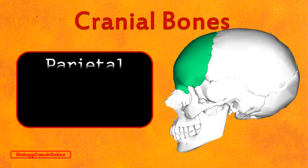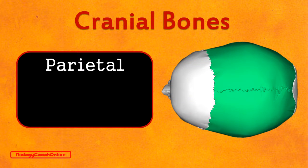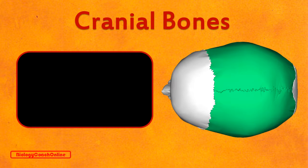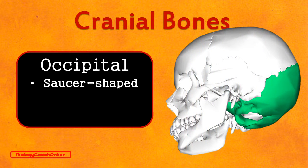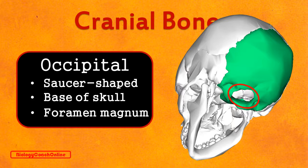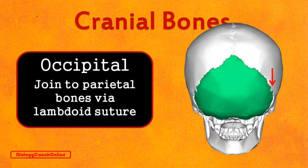The parietal bone comes from the Latin meaning 'wall.' This large paired bone forms the roof and sides of the cranium. Looking at the superior aspect, we can see the left and right parietal bones joined together at the sagittal suture. The occipital bone is located at the very back of the cranium — it's kind of saucer-shaped. Looking at the inferior aspect, we can see that the occipital bone forms the base of the skull, and rotating further we can easily identify the foramen magnum. The occipital bone is connected to the parietal bones at the lambdoid suture.